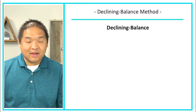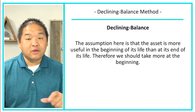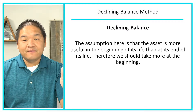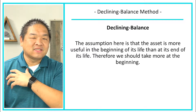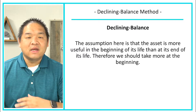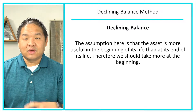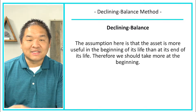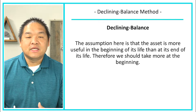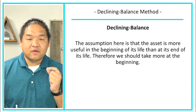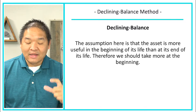The assumption behind the declining balance method is that the asset is more useful at the beginning of its life than towards its end. Towards its end, there are usually a lot of repairs, maintenance, and downtime. So the usefulness of the asset is greater at the beginning, which is why companies use declining — they feel their assets are more useful at the beginning and should take more depreciation early.